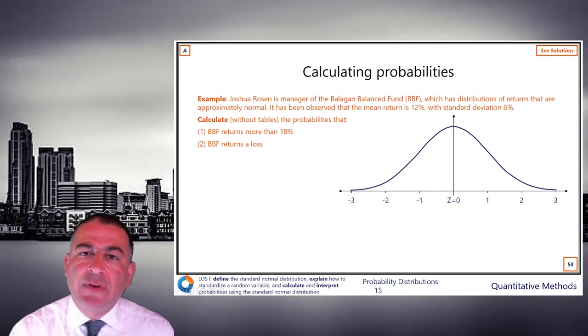It has been observed that the mean return is 12%, standard deviation 6%. Calculate, without tables, the probability that BBF returns more than 18% or BBF returns a loss. Have a go at that and come back when you've tried it.